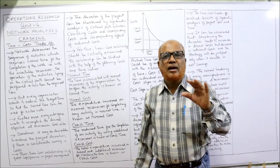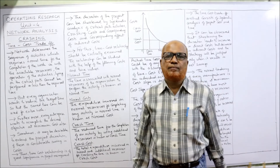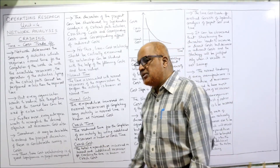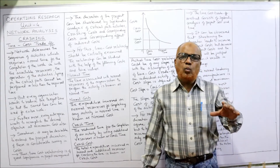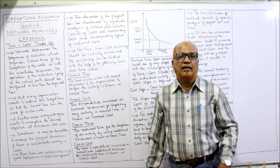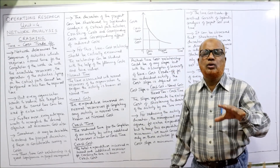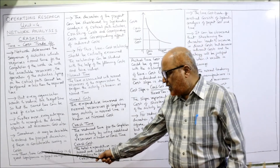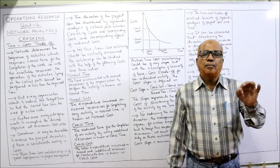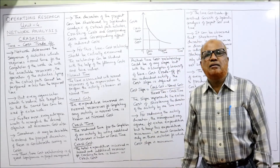Every enterprise wants to accomplish its desired objective at minimum cost — the project should be completed within the budgeted cost. Sometimes it may be desirable to extend the project duration if there is considerable saving in cost. It is not always necessary to shorten the duration; sometimes lengthening the duration saves cost. The management wants to find out whether to reduce or increase project duration. The time-cost trade relationship is of significant importance in project management.